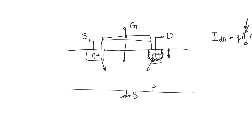The other leakage we need to discuss in depth is subthreshold conduction — conduction between the source and the drain that happens below the threshold voltage. This is because even below the threshold voltage there are electrons in the channel. The threshold voltage is defined as the voltage at which the channel is as n-type as the body is p-type, so even below threshold there can be many electrons in the channel, meaning current will flow.